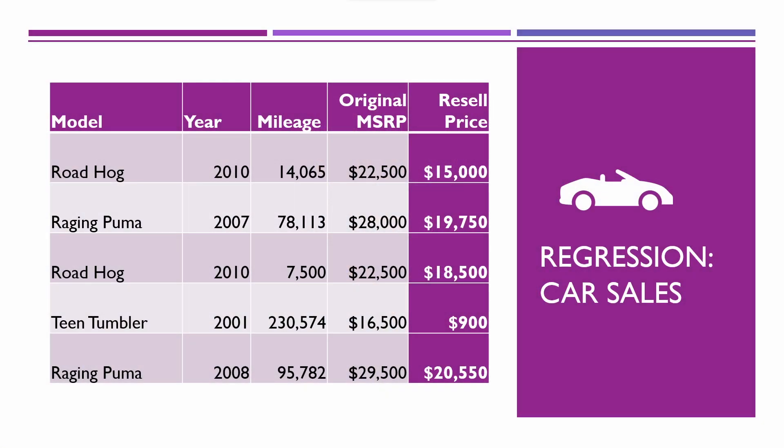For example, you could train a regression model to predict how much a used car would sell for, given historical data on recent used car sales in your area. A regression experiment I did in the past involved predicting the number of minutes I'd need to spend in the morning scraping off my car's windshield. I built a dataset over some time by automatically tracking overnight weather predictions and then manually recording the number of minutes I spent scraping off my car. By the end of the winter, I had a model trained sufficiently to predict how much time I'd need to budget for scraping my windshield. Of course, by the next winter we had moved and I had a garage, so my model was now worthless — but this was still a great way of learning data science and playing around with regression experiments.